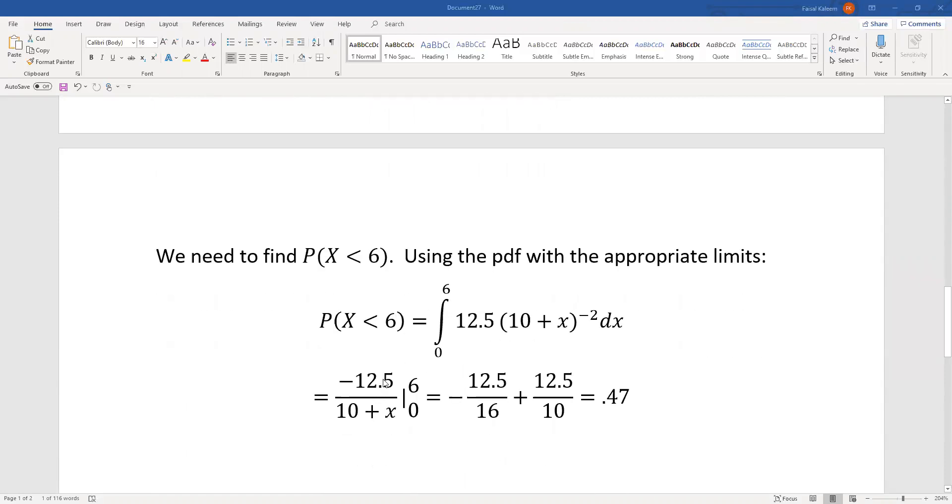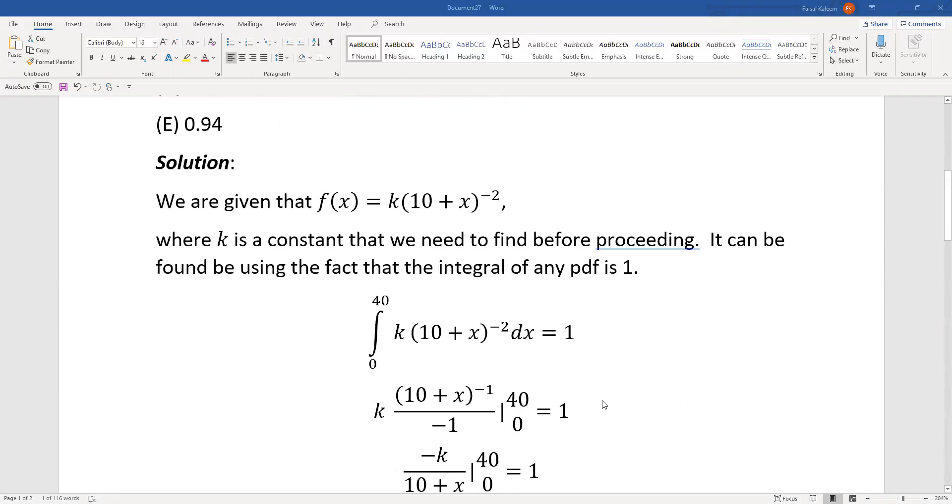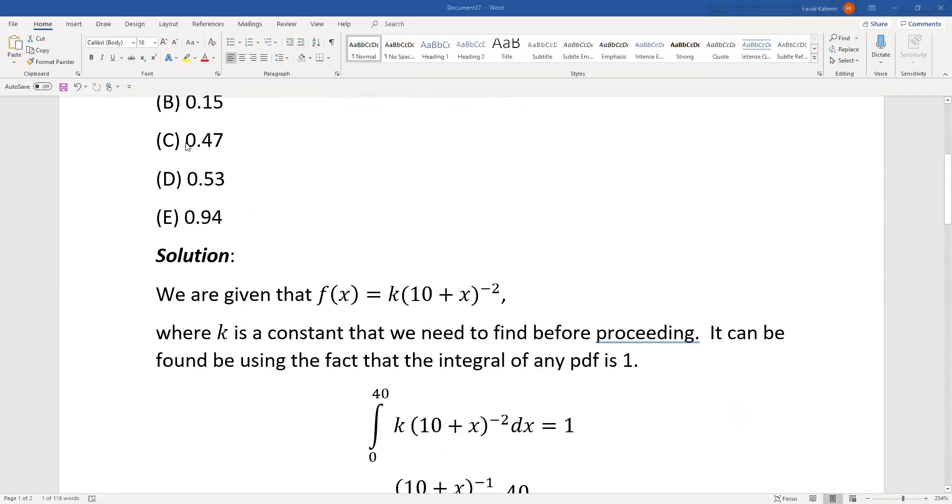It's the same integral as before, and instead of k we have 12.5. Once we integrate and substitute the 0 through 6 limits, we end up with 0.47, which is choice C.